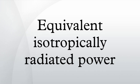In radio communication systems, equivalent isotropically radiated power, or alternatively effective isotropically radiated power, is the amount of power that a theoretical isotropic antenna would emit to produce the peak power density observed in the direction of maximum antenna gain. EIRP can take into account the losses in transmission line and connectors and includes the gain of the antenna. The EIRP is often stated in terms of decibels over a reference power emitted by an isotropic radiator with an equivalent signal strength.